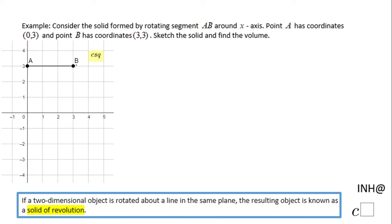This segment is rotating around the x-axis. So that means this point A is going to be right here when it's rotated. Point B is similar - when you rotate around the x-axis, it's going to be right here.